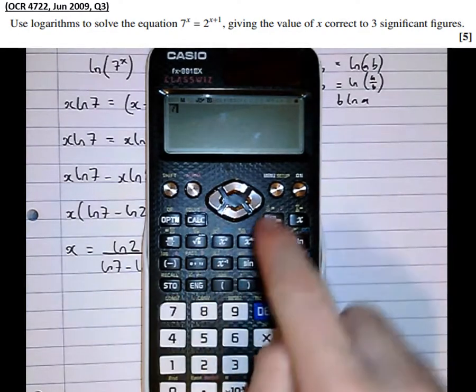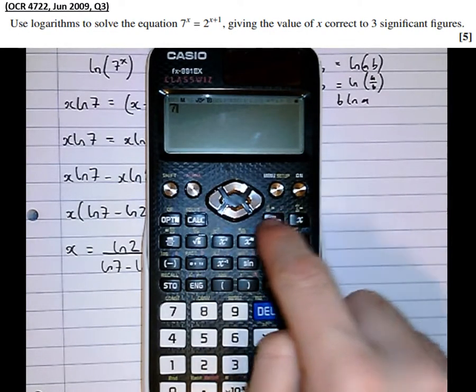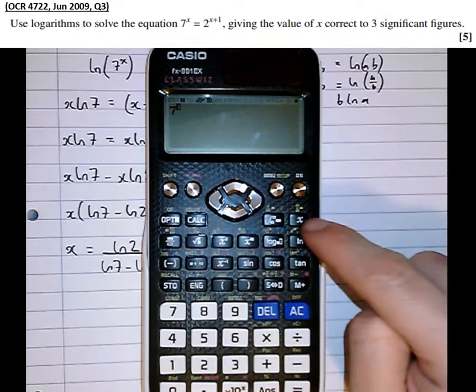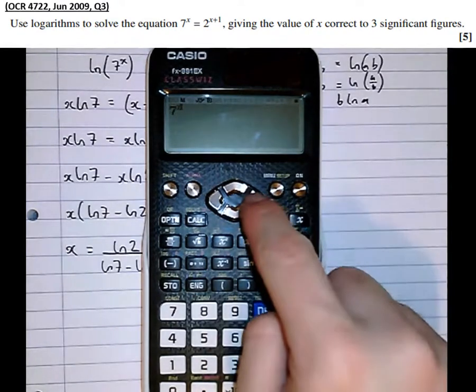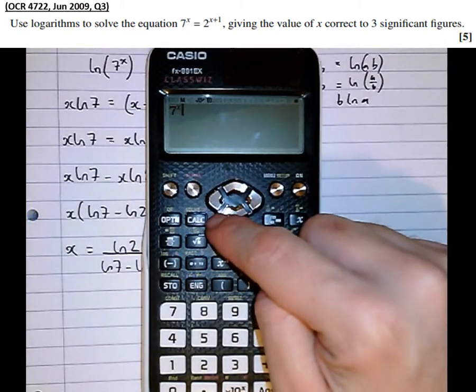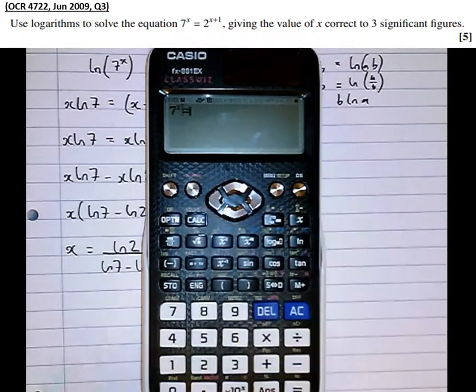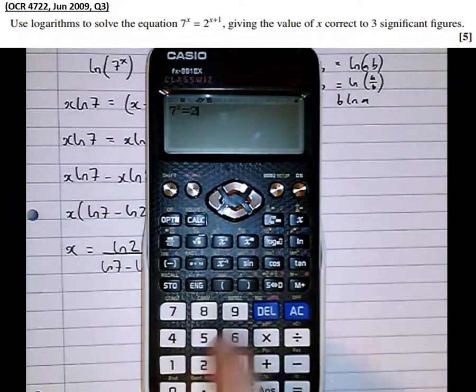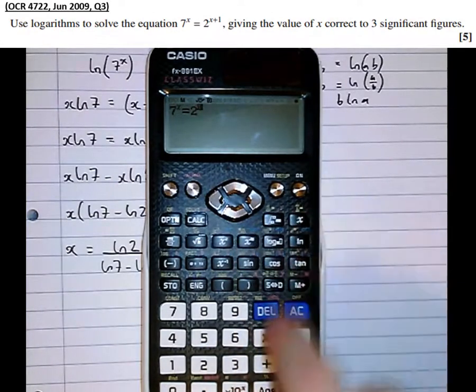So, if we type in the equation exactly as it appeared originally, so 7 to the power of x, and the x is in the top right hand corner there. 7 to the power of x, then move the cursor back in line. And to put this equation in here, I'm going to use this red equals sign. Equals 2 to the power of x plus 1.